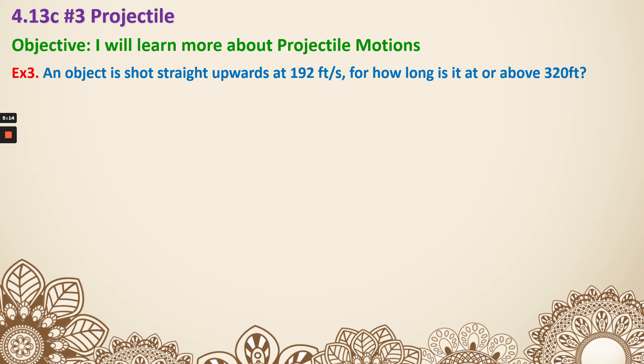Next, example 3. An object is shot straight upward at 192 feet per second. So h(t), since it's about feet, so it's negative 16t squared, and it's upward, so plus 192t, then there's nothing else. It's just an object shot. So we're going to think it is actually from the ground. But I'm trying to calculate how long is it at or above, so it's not just reaching 320.